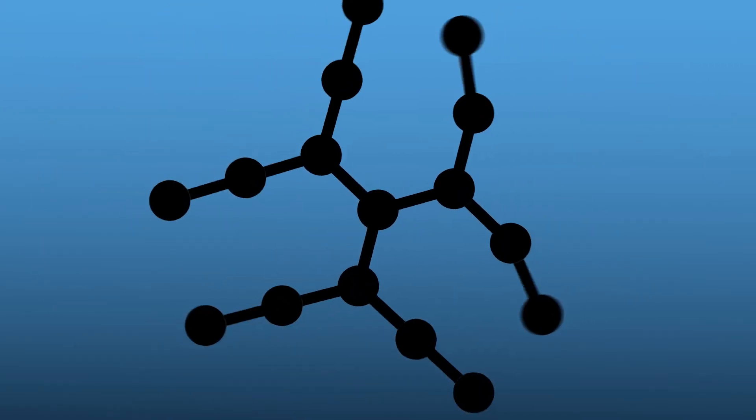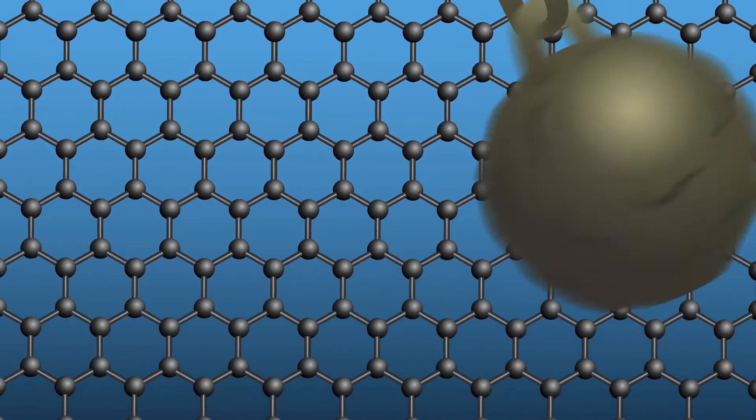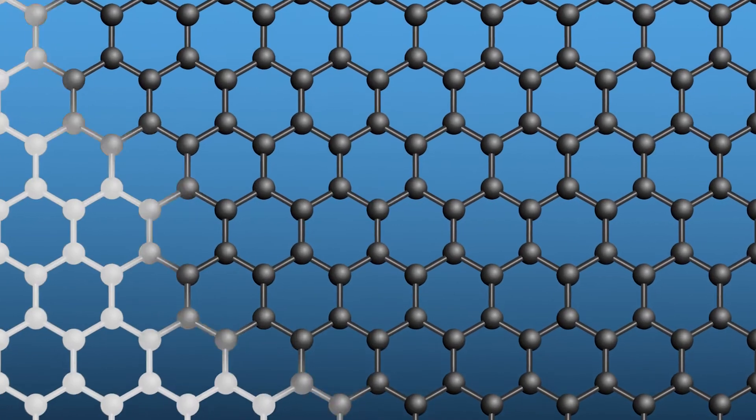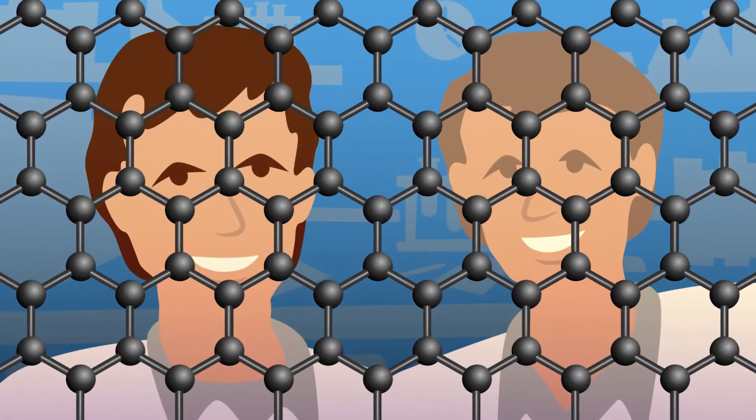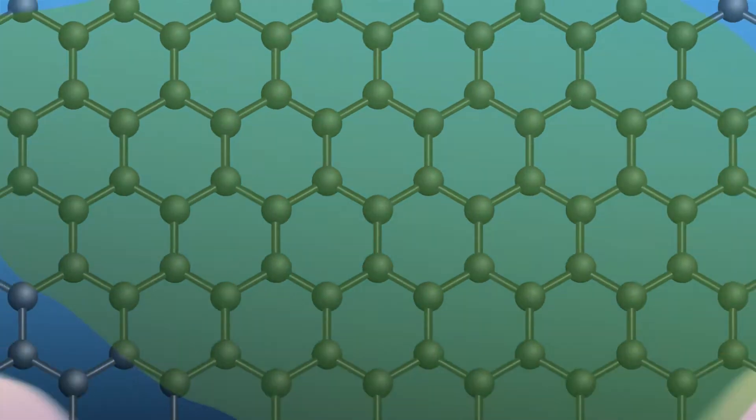Although just one atom thick, graphene is 200 times stronger than steel. It's also conductive, transparent, flexible and light.